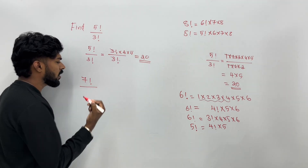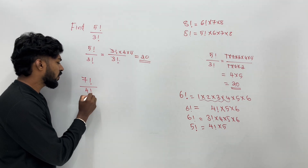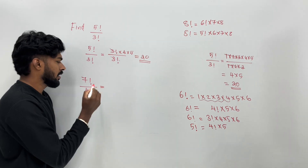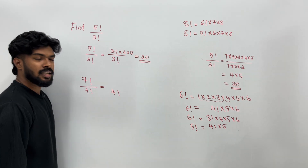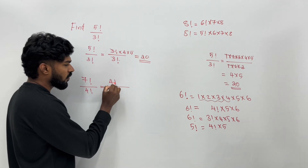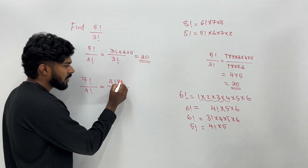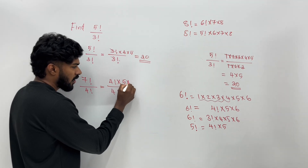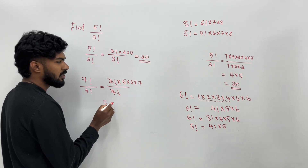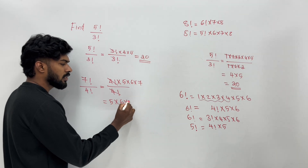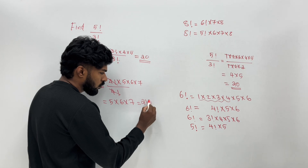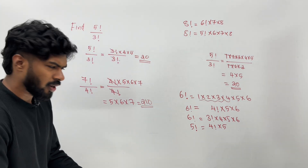How about 7 factorial divided by 4 factorial? Simplify it. 7 factorial is 4 factorial into 5 into 6 into 7. The 4 factorials cancel, leaving 5 into 6 into 7. 5 into 6 is 30, and 30 into 7 is 210.